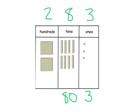In this number, the two is in the hundreds place. That means I would count by one hundred to find its value: one hundred, two hundred.